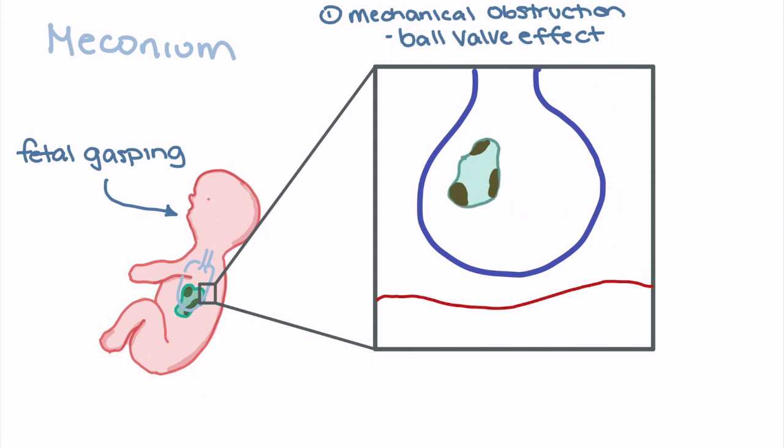As we can see here, as meconium enters the airway it will be pushed down during inspiration. As the neonate takes a breath in, that meconium can make its way down into the lower parts of the alveoli.